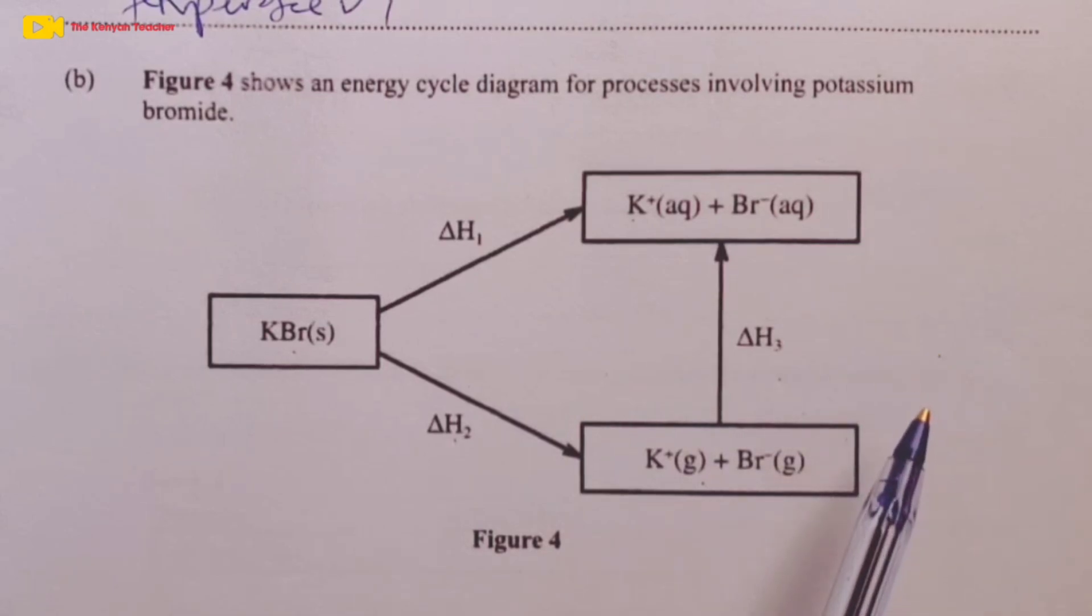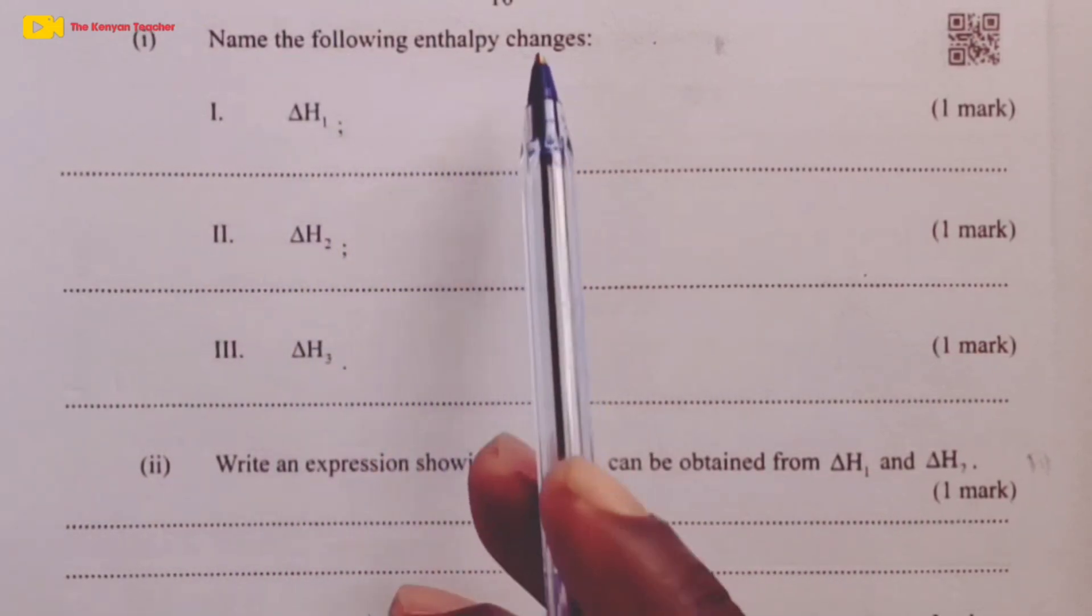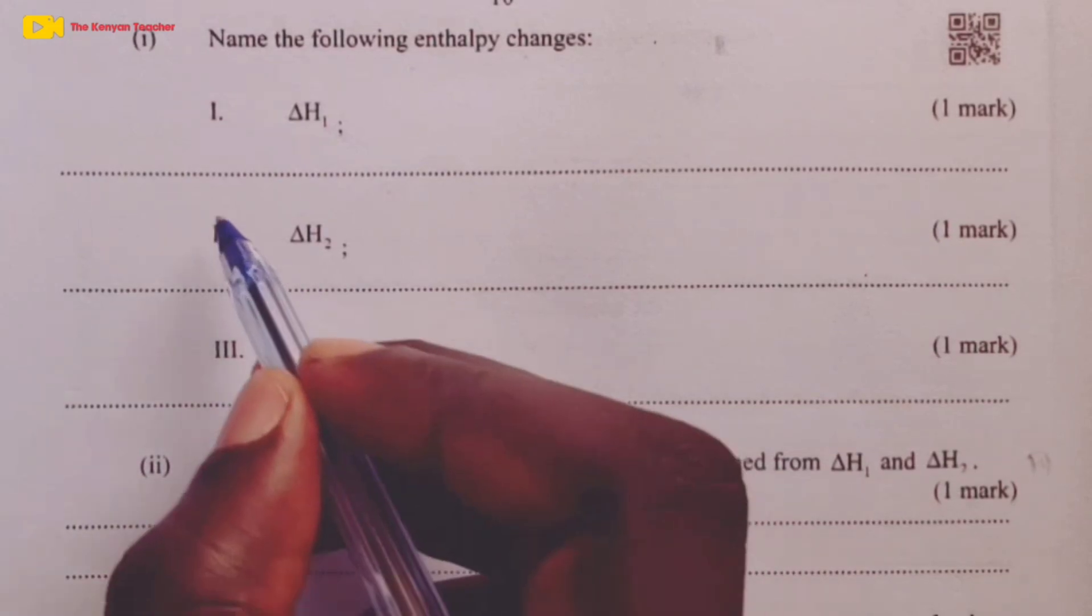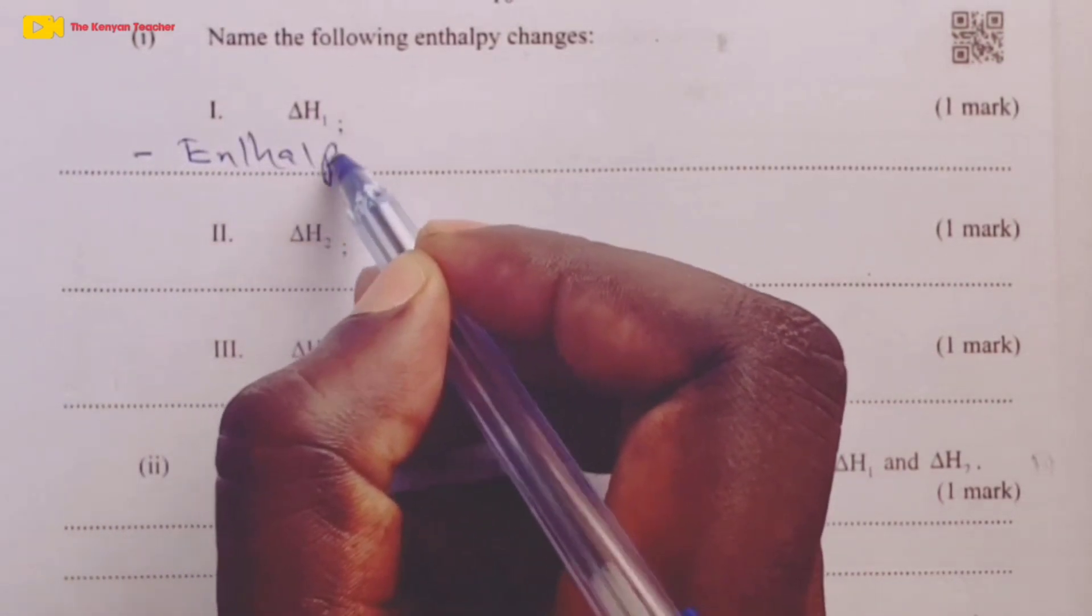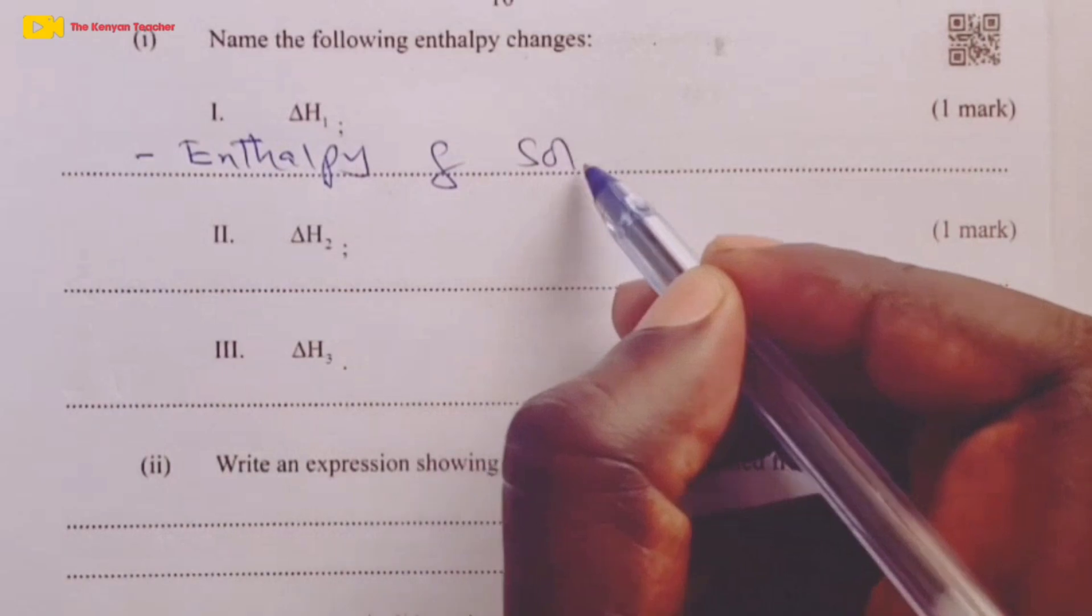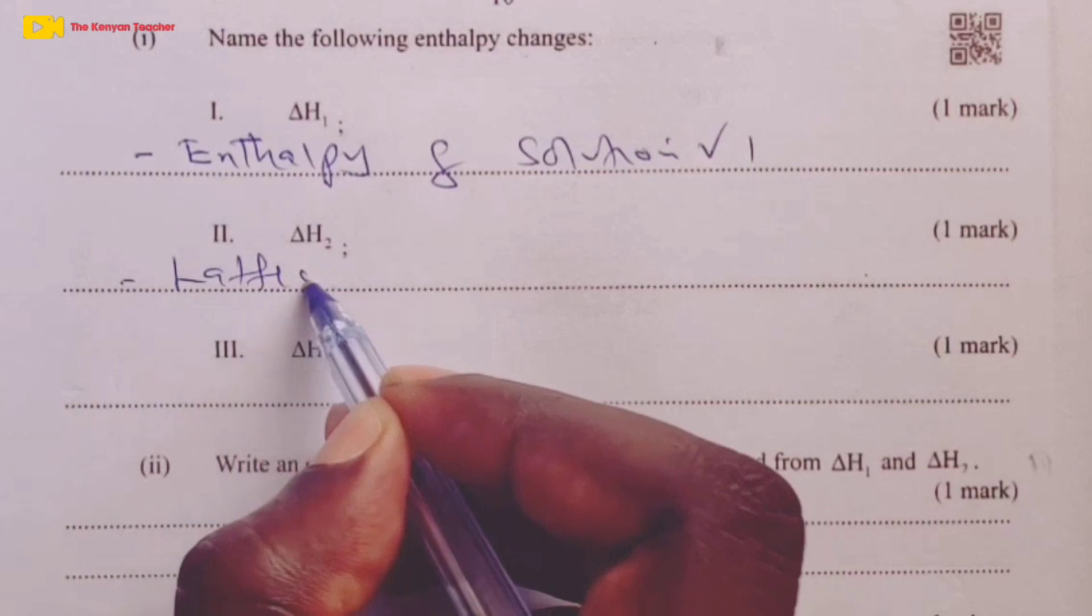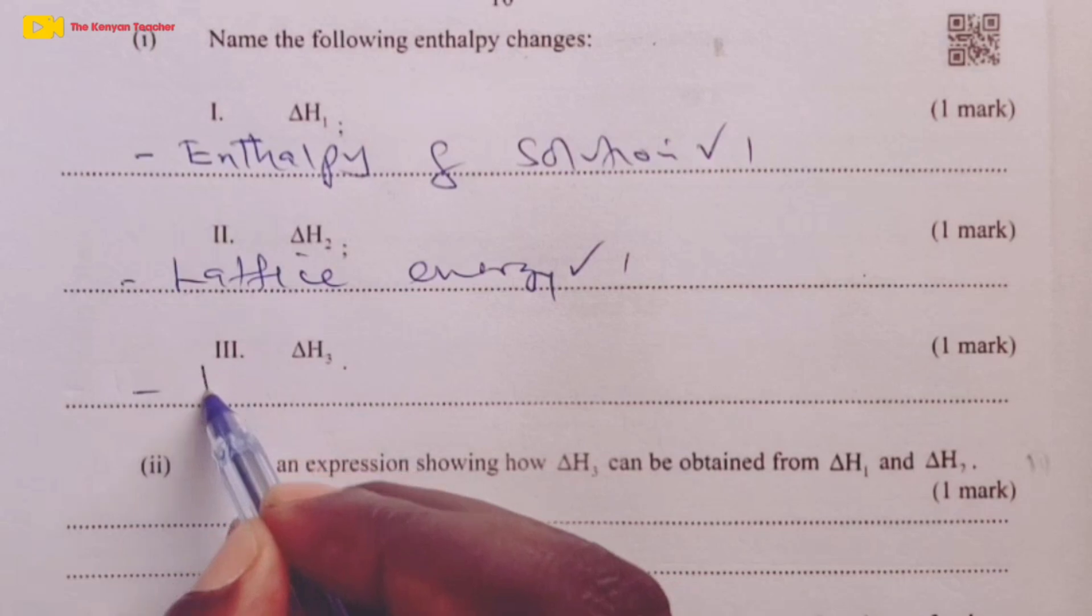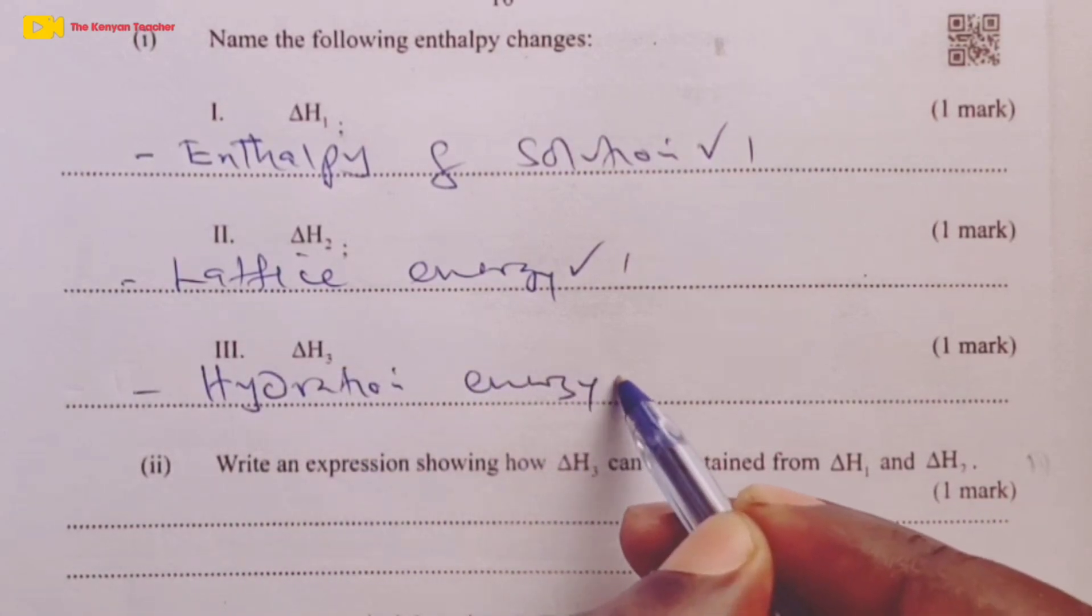Having had a discussion about the diagram, let's now look at the questions. Part 1, we were asked to name the enthalpy changes represented by delta H1, 2, and 3. Delta H1 becomes our enthalpy of solution. Delta H2 is our lattice energy. And delta H3 was our hydration energy.